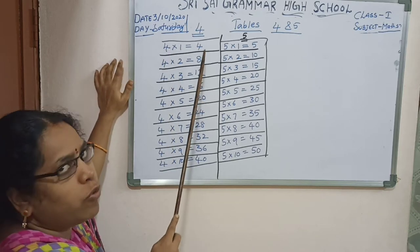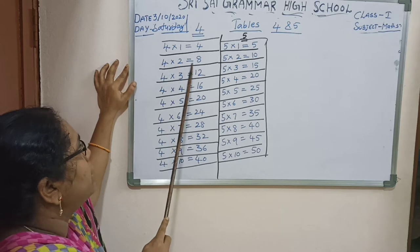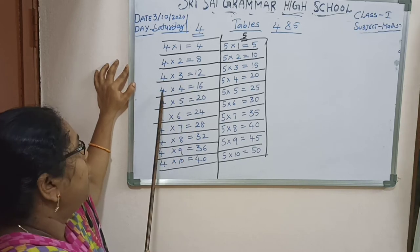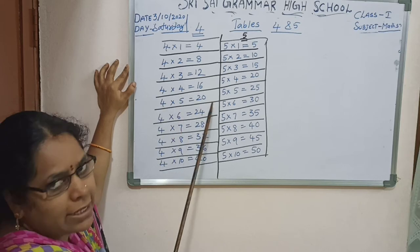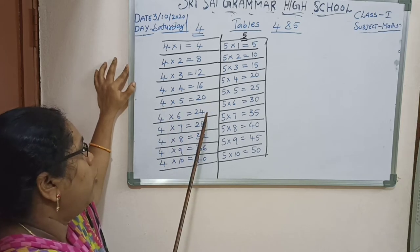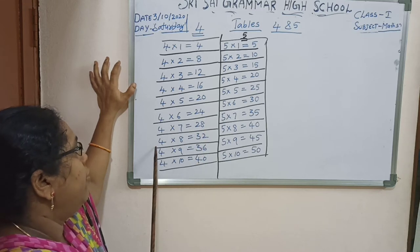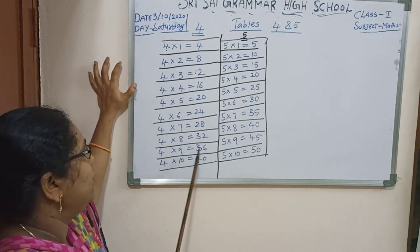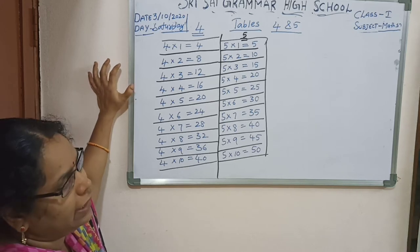4 ones are 4. 4 twos are 8. 4 threes are 12. 4 fours are 16. 4 fives are 20. 4 sixes are 24. 4 sevens are 28. 4 eights are 32. 4 nines are 36. 4 tens are 40.